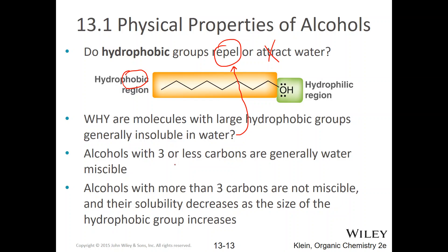Alcohols with three or fewer carbons — some textbooks say four or fewer — are generally miscible with water. Alcohols with more than three or four carbons are not miscible, and their solubility decreases as the size of the hydrophobic group increases.